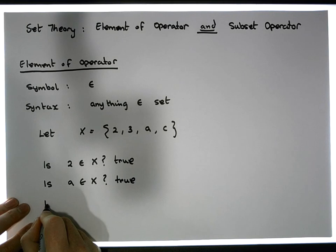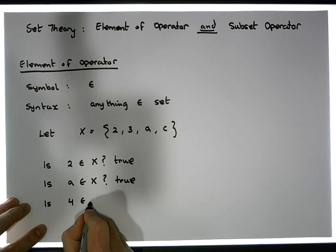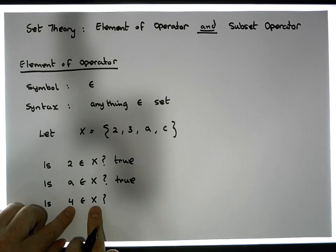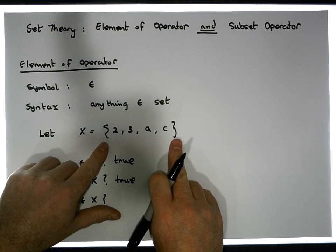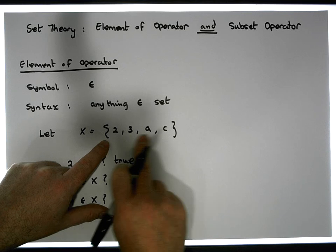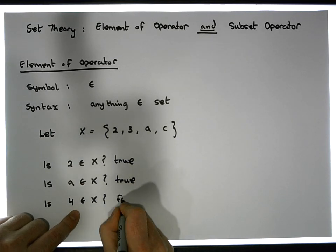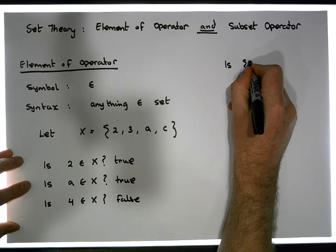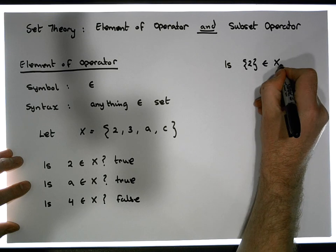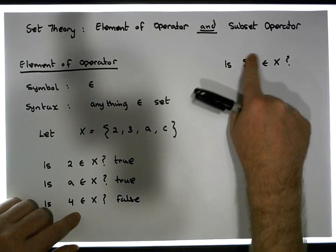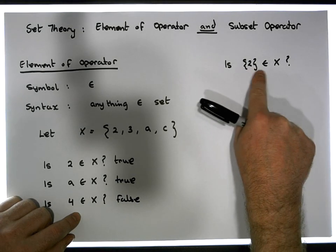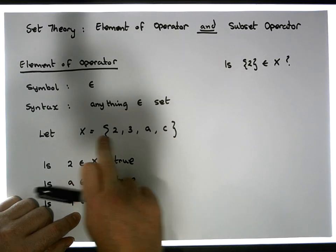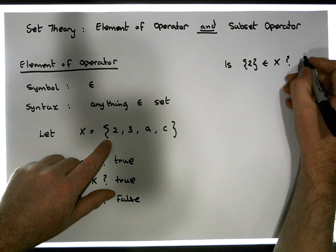Now let's try: is 4 an element of X? For this to return true, 4 needs to be listed within set X. Looking at the set, 4 is not listed there, so this is false. Let's ask another question: is the set {2} an element of X? For this to be an element of X, the set {2} — open curly brace, 2, close curly brace — in its full form needs to be listed inside X, which it is not, so this is also false.